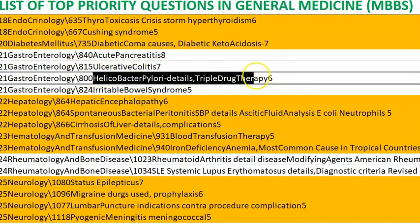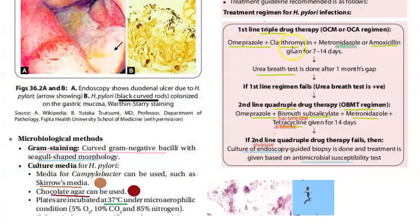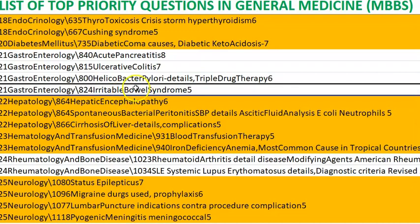Helicobacter pylori: you should know the triple drug therapy — omeprazole, clarithromycin, and metronidazole. Also the quadruple drug therapy: bismuth subsalicylate, metronidazole, and tetracycline. Always keep in mind the urea breath test.